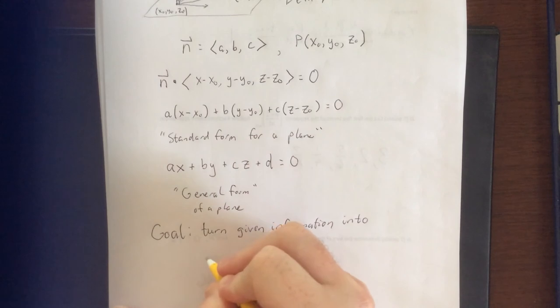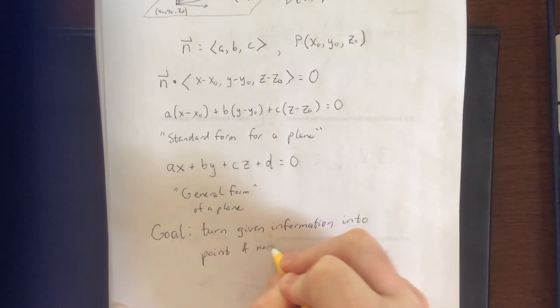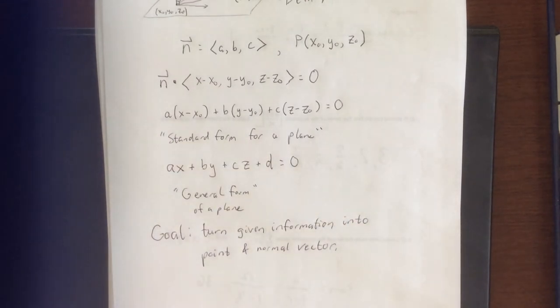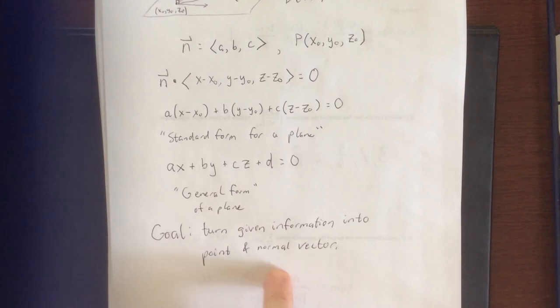Essentially the same thing is true for lines as well, except instead of a normal vector, we are going to be going for a direction vector. So, let's take a look at some examples.